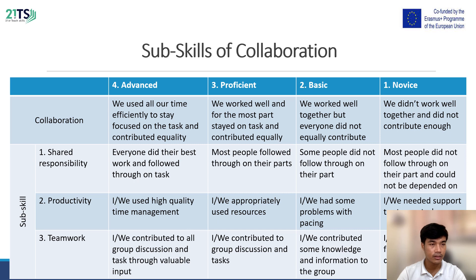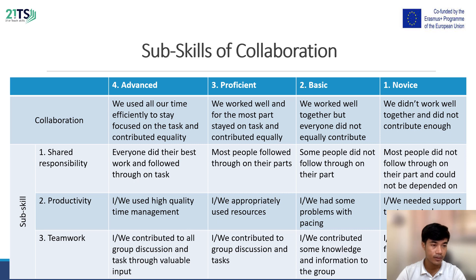Sub-skill two: Productivity. At the advanced level, we use high-quality time management. At the proficiency level, we appropriately use resources. At the basic level, we had some problems with time management. At the novice level, we need support to stay on task. Sub-skill three: Teamwork. At the advanced level, we contribute to all group discussions and tasks through valuable input. At the proficiency level, we contribute to group discussions and tasks.